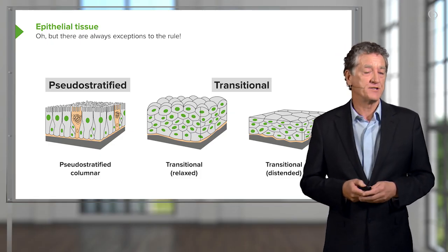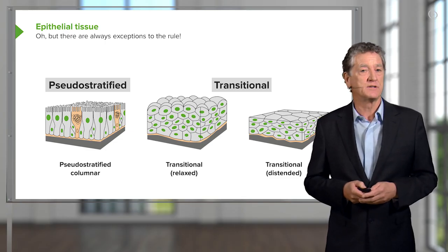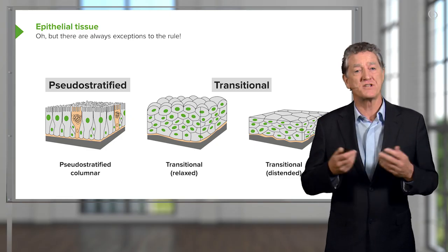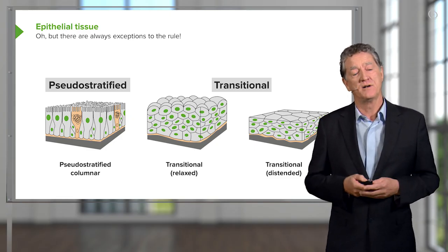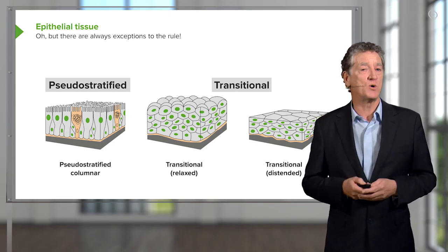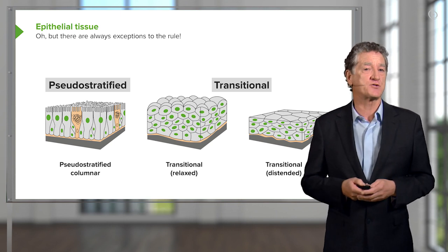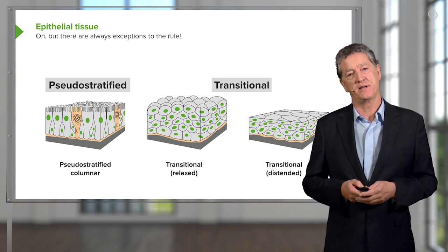Sometimes on the surface of these cells there are specializations — there could be cilia or microvilli. In those cases we might call this a pseudostratified ciliated epithelium.